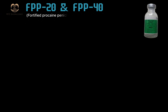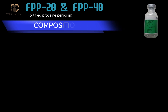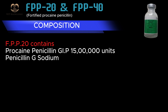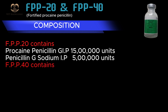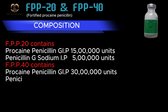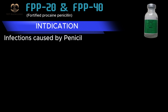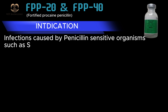Fortified Procaine Penicillin (FPP) Composition: FPP-20 contains Procaine Penicillin G IP 1,500,000 units and Penicillin G Sodium IP 500,000 units. FPP-40 contains Procaine Penicillin G IP 3,000,000 units and Penicillin G Sodium IP 1,000,000 units. Indications: infections caused by penicillin-sensitive organisms such as Streptococcus.